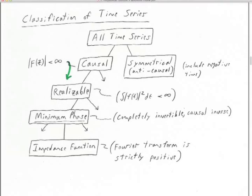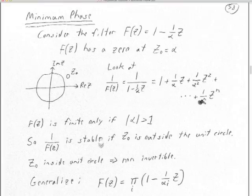We've been looking at the classification of time series. All time series, all time data, all filters, and really all spatial series can be divided into causal and anti-causal. Of the causal, some are realizable, meaning they hold to at least some parts of physics such as being limited in their total energy. Some realizable functions are what we call minimum phase, and some minimum phase functions are known in exploration seismology as impedance functions, which give us the reflection coefficients and the two-way travel times to the interfaces. Our question is: what is minimum phase?